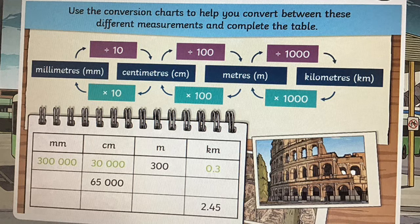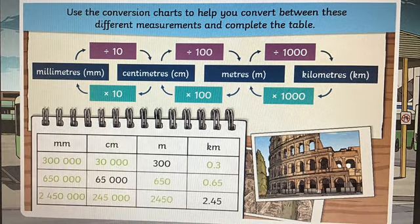1000 metres in every kilometre means that you need to move the digits three spaces to the right to solve this one. Have a go at the other ones below now that you've got this top one solved. Pause the video to give yourself a little bit of time.